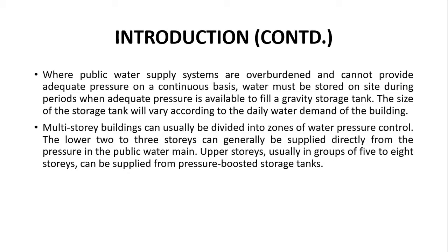The lower two to three stories can generally be supplied water directly from the public water main because the pressure is strong enough — up to a maximum of three stories. For upper stories, we group them in five to eight stories, and each group is provided by a pressure-boosted storage tank. A specific pressure pump boosts the pressure and takes water from the third story up to the next eight stories and stores it in a storage tank. Then that storage tank is connected to another pressure booster pump to carry water to the next eight stories, and that is how the system works.